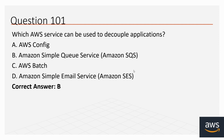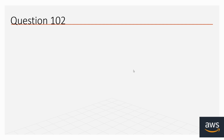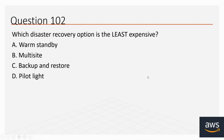Question number 102: Which disaster recovery option is the least expensive? Options: A. Warm Standby, B. Multi-Site, C. Backup and Restore, D. Pilot Light. The correct option is C, Backup and Restore.